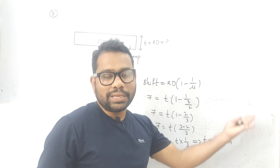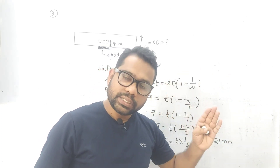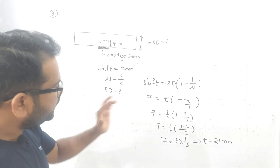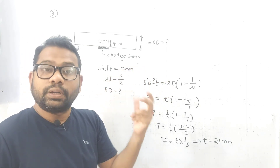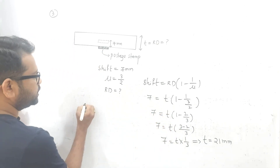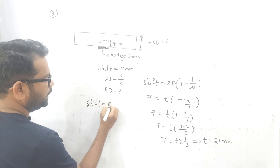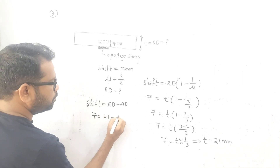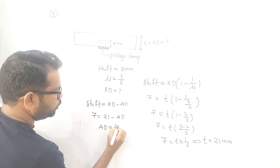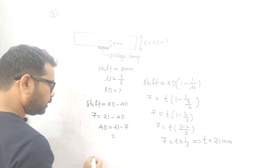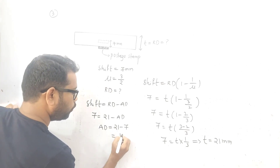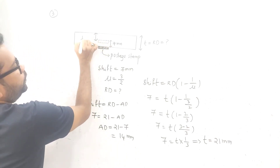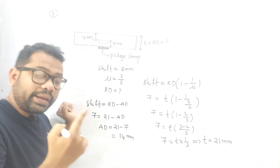If they ask for apparent depth in this numerical: shift = real depth − apparent depth, so apparent depth = 21 − 7 = 14 mm. This is not asked in the numerical but we should be ready in case they ask.